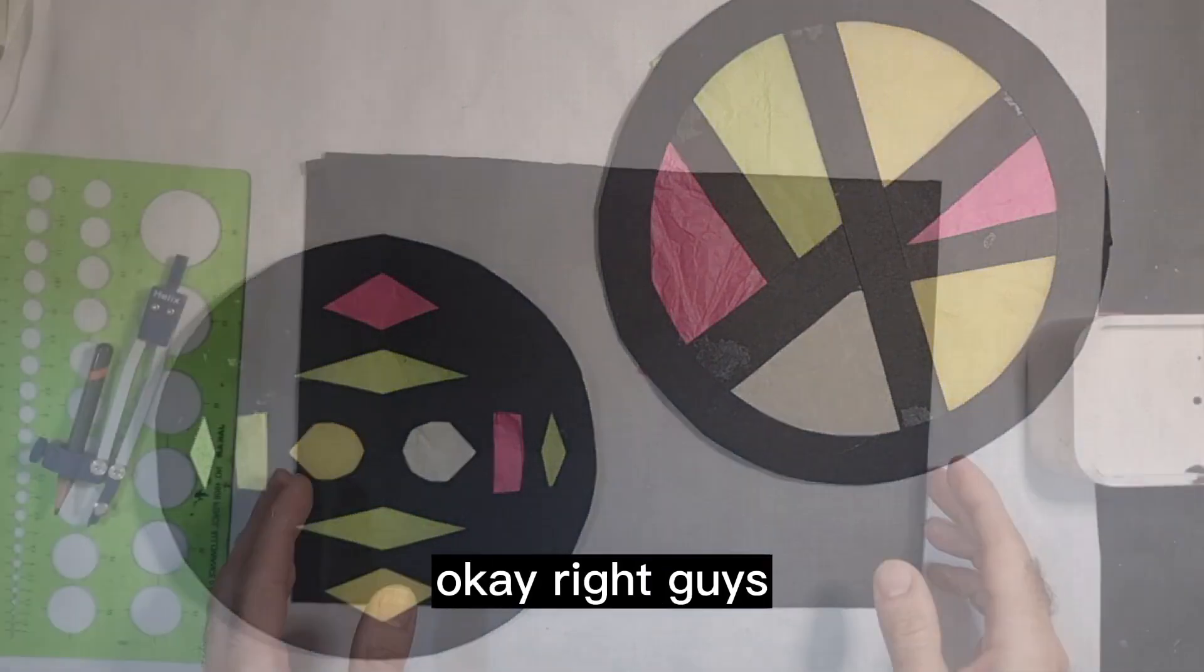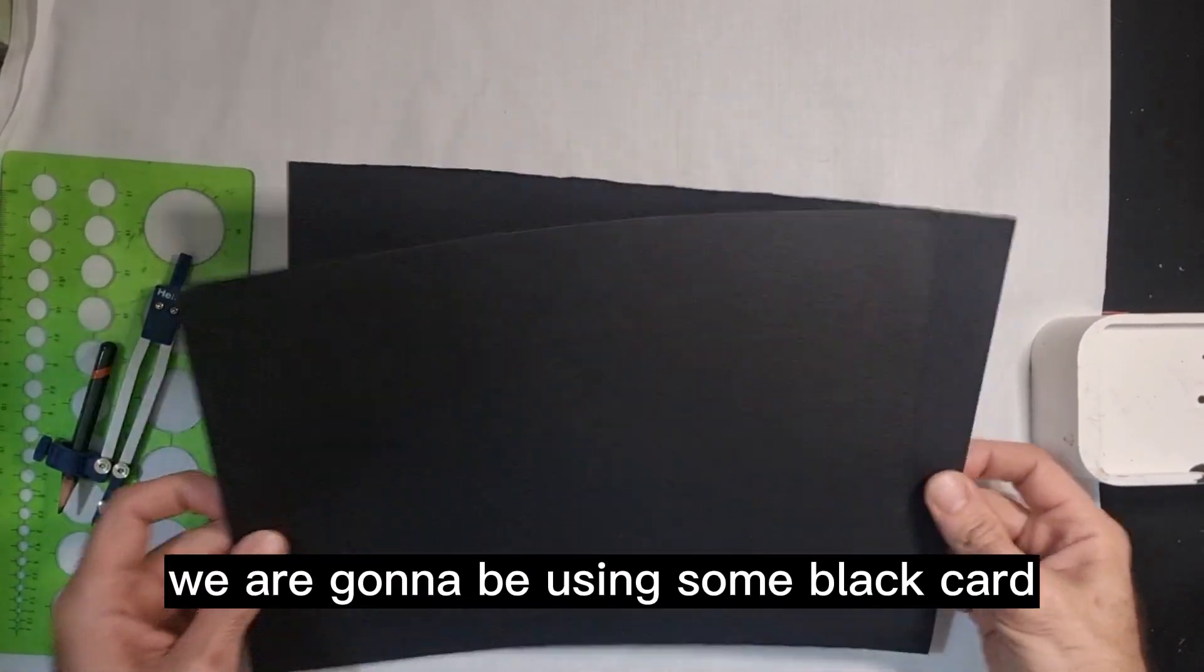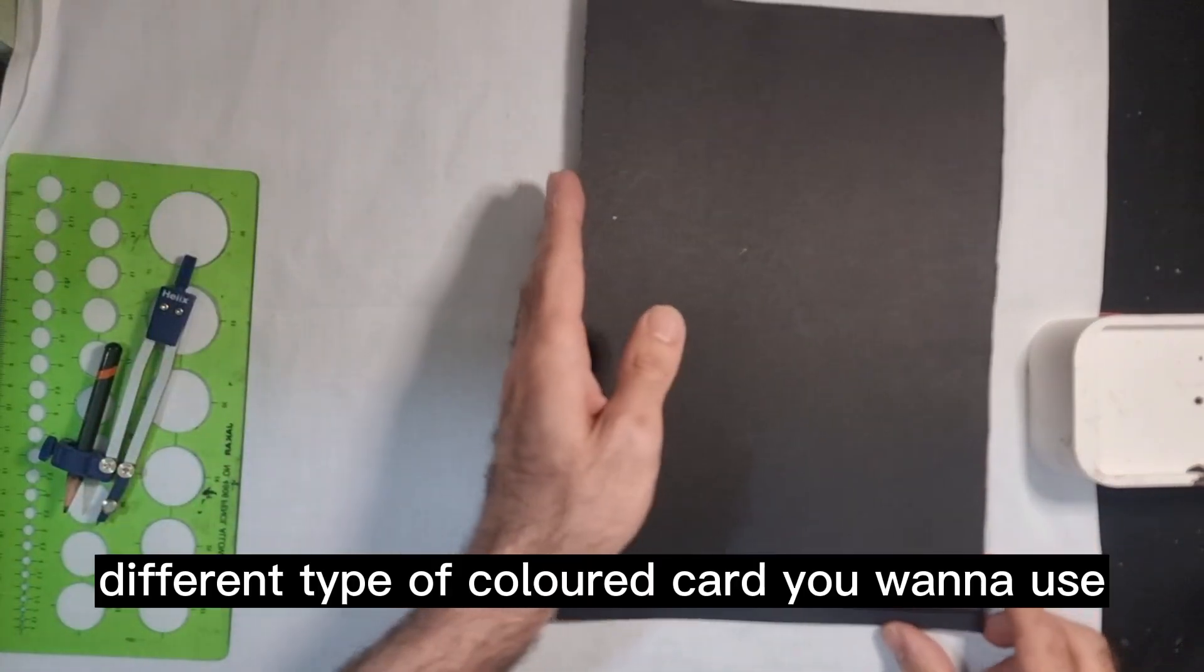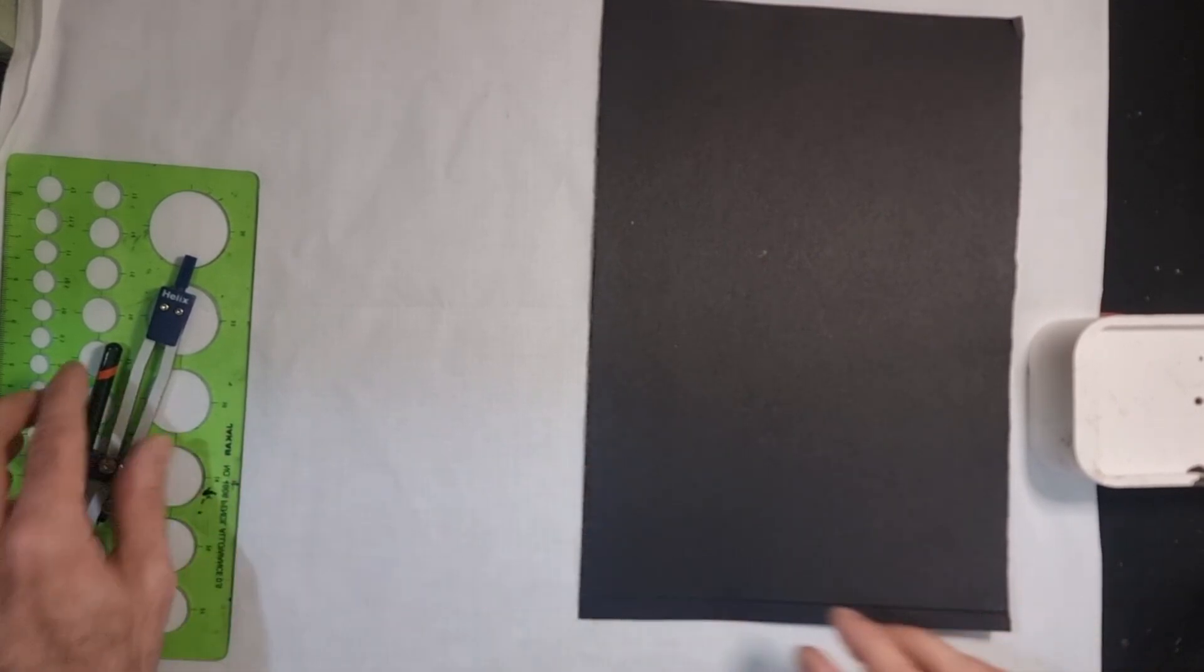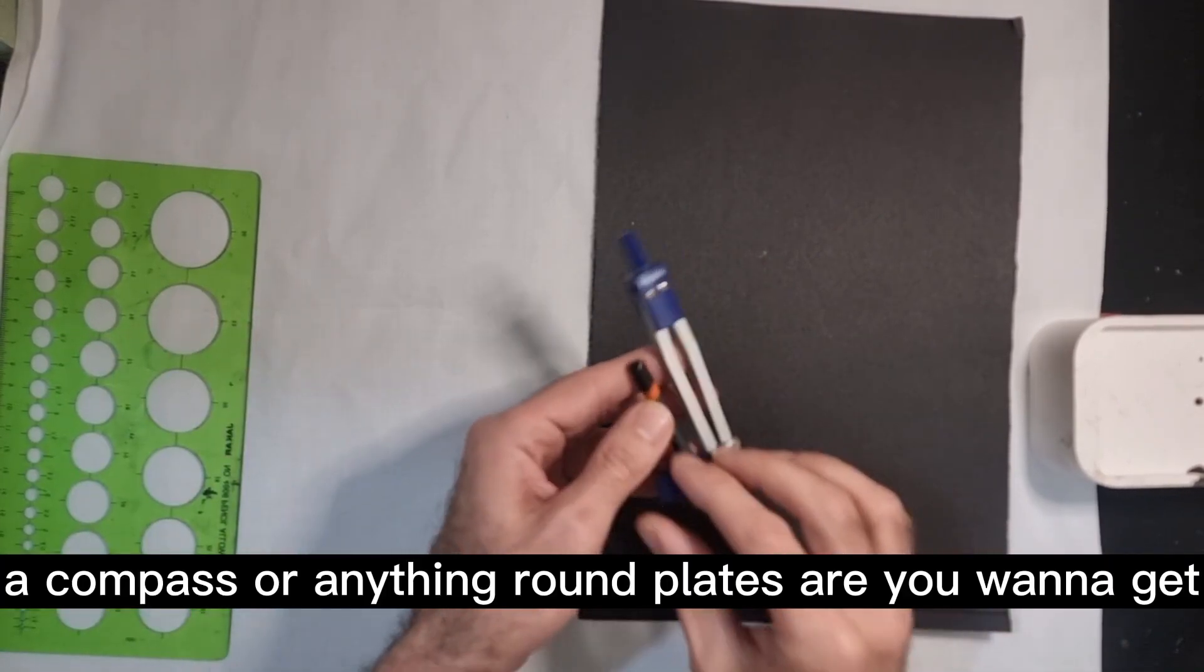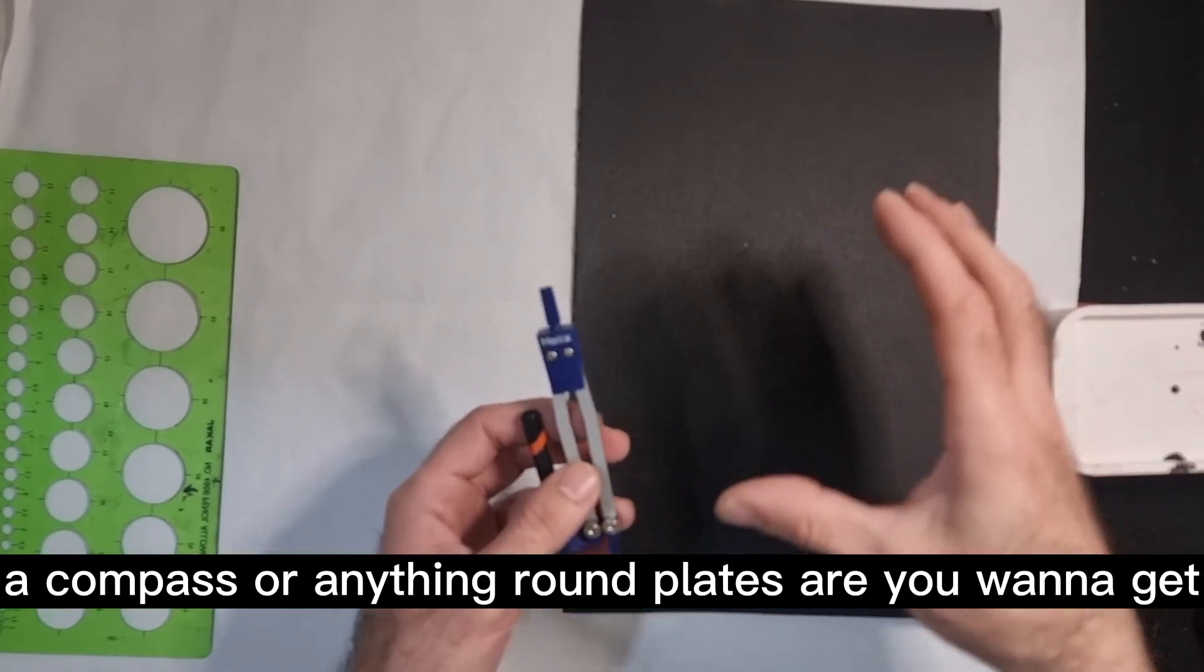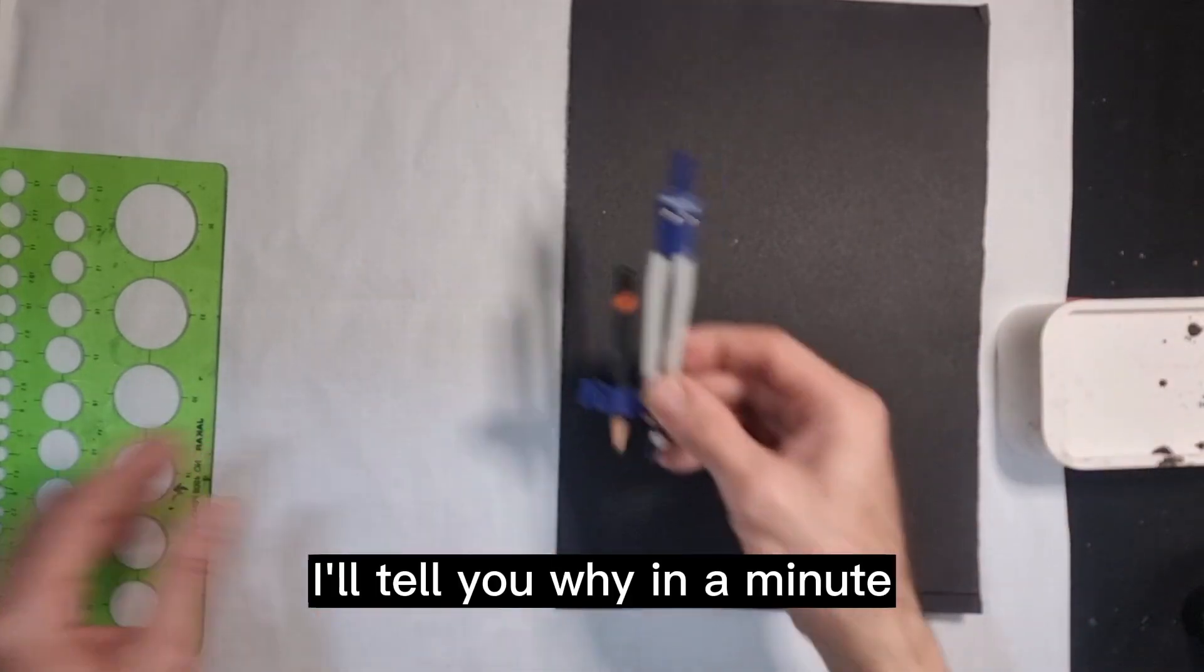Okay, right guys. To make our stained glass windows we are going to be using some black card, or we can get any different type of colored card you want to use, but I find black is the best one to use. A compass, or anything round, plates. If you are going to use a plate, use two different types of sizes of plates. I'll tell you why in a minute.